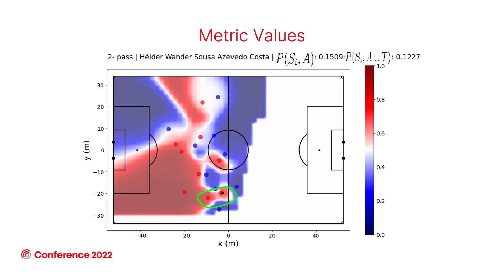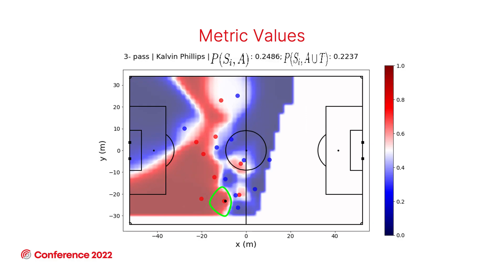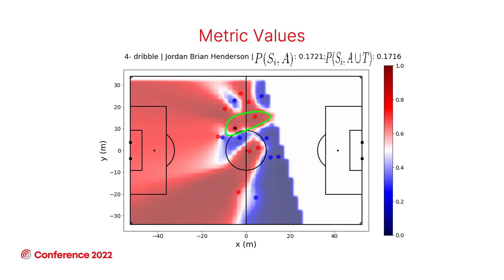The coolest part is the next action: Helder Costa's pass makes peer recovery PC get lower than peer recovery because of the spatial context — Leeds United has a lot of pitch control there. Then for Phillips's wrong riskier pass, peer recovery and peer recovery PC both get higher, but peer recovery PC is lower than peer recovery because he has the space to make this pass. The last action is a dribble by Henderson symbolizing he got the ball back — a situation where peer recovery and peer recovery PC are very equal.